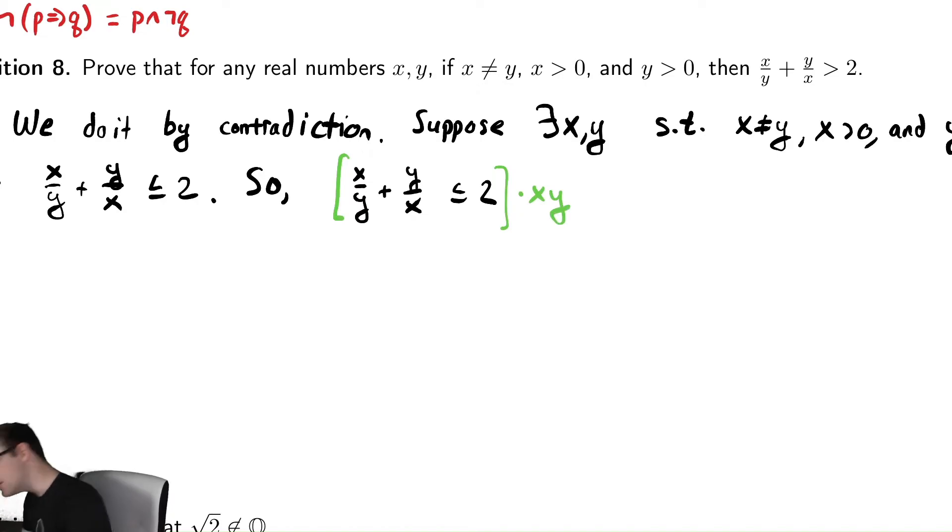Doing that makes it get rid of all those fractions, which can be tedious. So in the first fraction there, we get the y's cancel and I get x squared. In the second fraction, similar story, but the x's cancel and I get y squared. And the right hand side, I get 2xy.